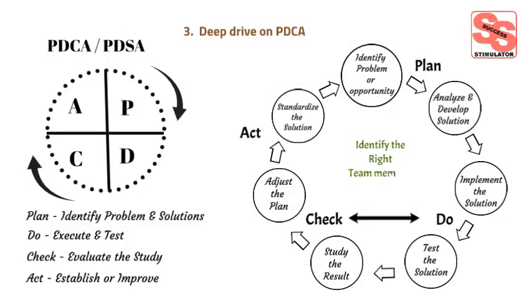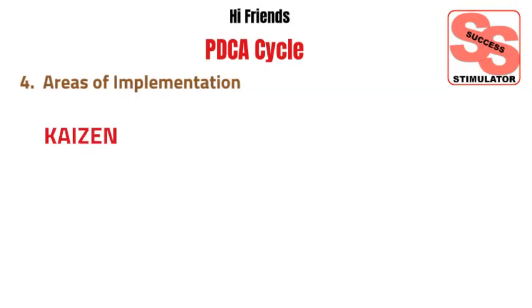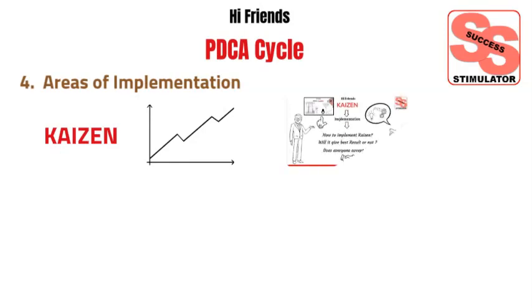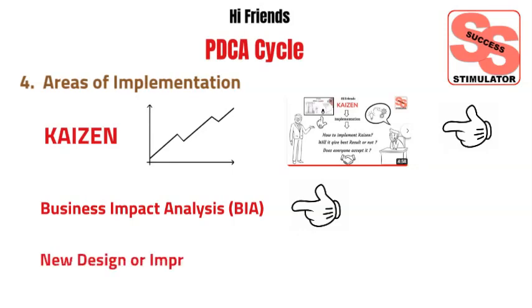Always identify the right team for a successful outcome. We'll see the areas where we can apply the PDCA cyclic approach. Kaizen is one area where we can use PDCA while implementation — it is broadly used while promoting continuous improvement in the organization. The next area is business impact analysis. PDCA can also be used while developing a new design or improving the existing design of a process, product, or service.